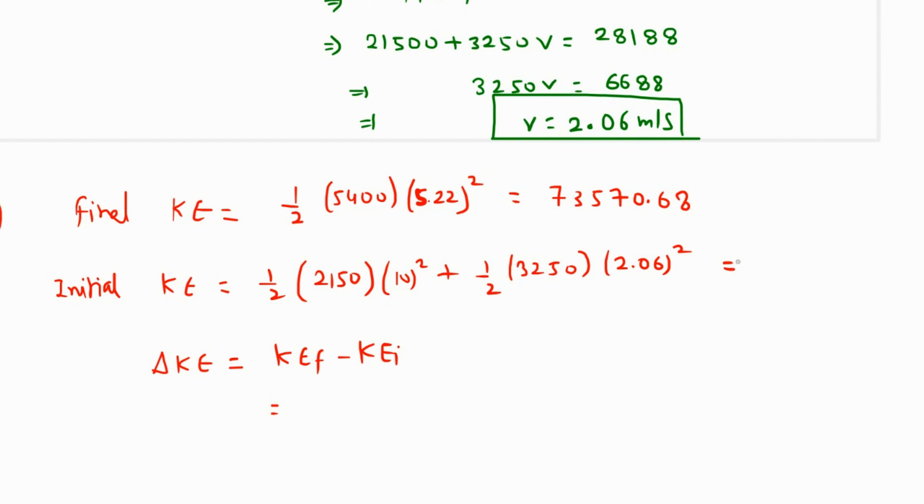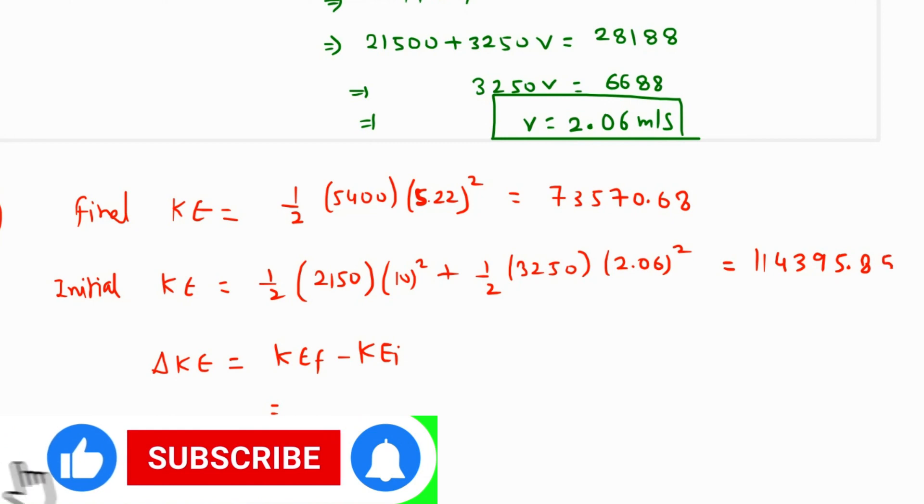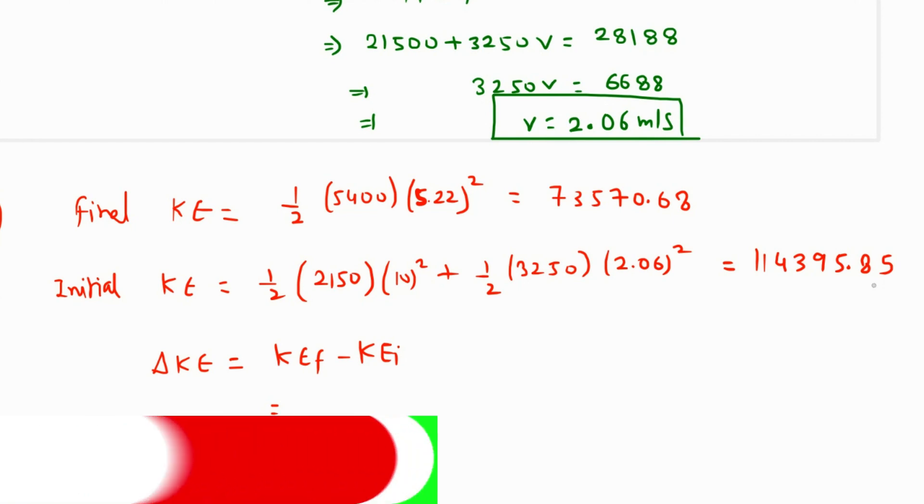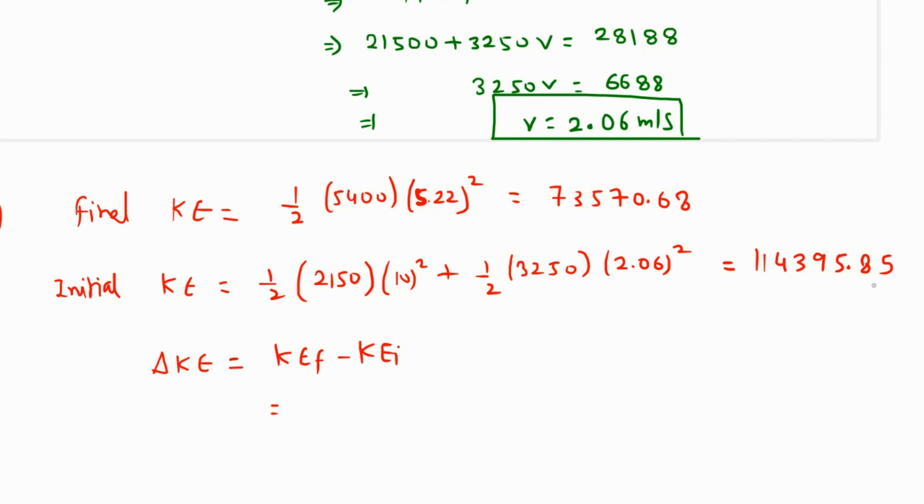Times 3250 times 2.06 squared, so this is coming as 114395.85. So definitely there is a decrease, so this value minus 73570.68, so this value is coming as minus 40825.17 joules.